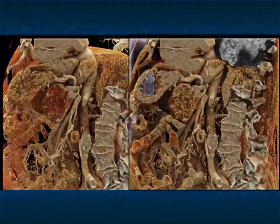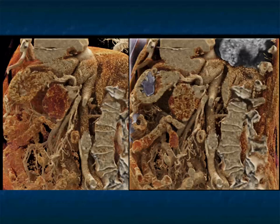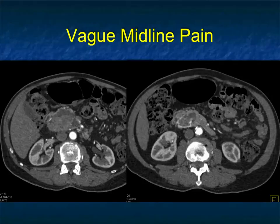Here it is again from a sagittal view. Sometimes the sagittal views are even better at showing the septations and the multiple small cysts. Often it's about choosing the best view. When you look at the axials, coronals, sagittals, and 3Ds together, you may have the best information possible.